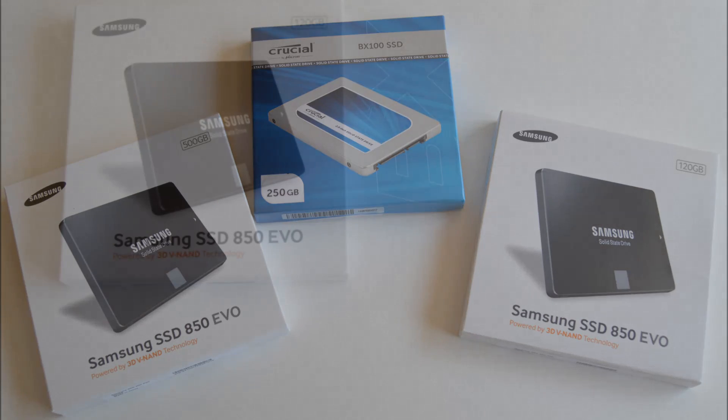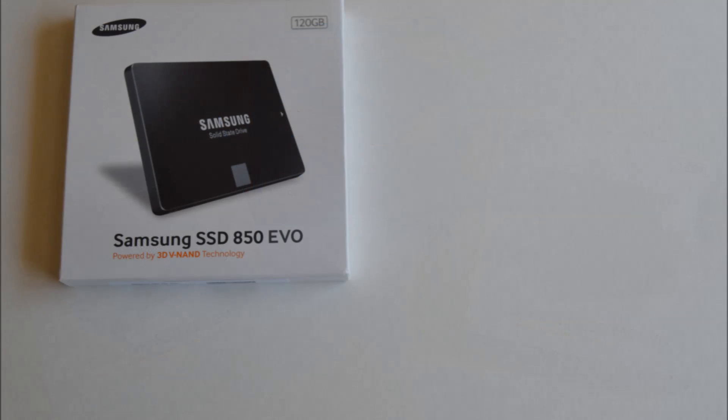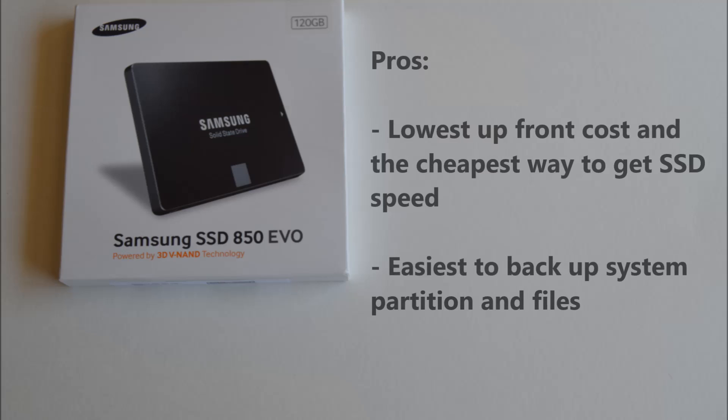The first size is the 120–128GB class. This class size has the lowest upfront cost and is the cheapest way to get SSD speed for your system. It's also the easiest to back up your system partition and files.